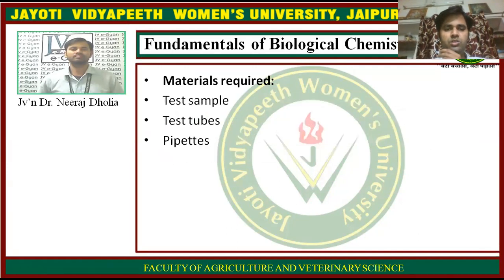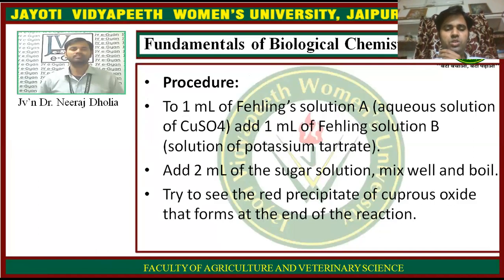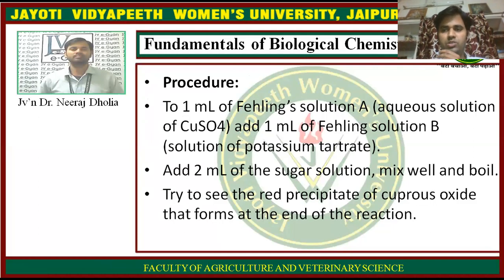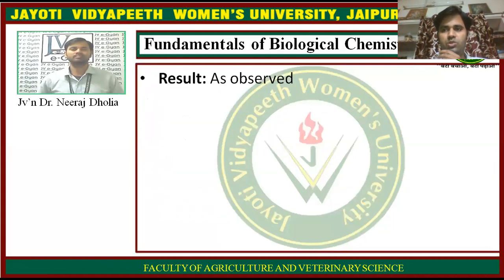You also need test tubes and pipettes. For the procedure, take 1 ml of Fehling's solution A and 1 ml of Fehling's solution B, add 2 ml of the test solution, mix well, and boil it. Observe for red precipitation of Cu₂O (copper(I) oxide). If the red precipitate forms, the test is positive; otherwise, it is negative.